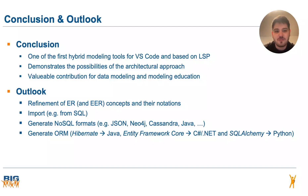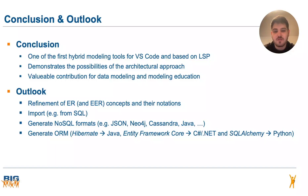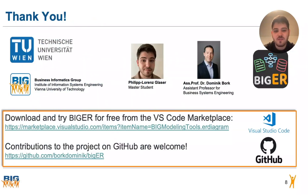As a final note, I want to provide a short outlook of our ongoing and future work. This includes refinement of ER and extended ER concepts and their notations, such that the tool can be used for a wide variety of modeling use cases. We also currently have students working on import functionality — for example, from SQL tables — and another student working on generating NoSQL formats to be integrated in upcoming releases. We also plan to support other formats such as object-relational mapping tools like Hibernate, Entity Framework Core, or SQLAlchemy. Thank you for your interest — feel free to try BigER from the VS Code Marketplace or check out the project on GitHub, where contributions are more than welcome.